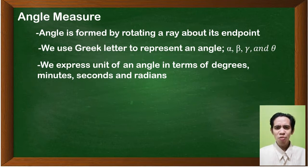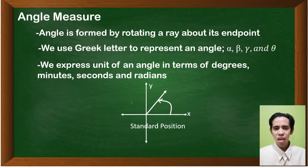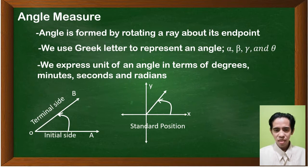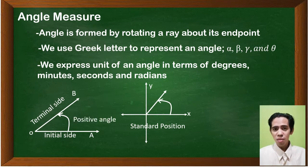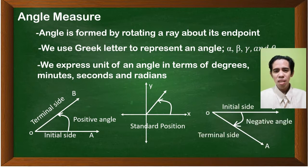An angle is in standard position if it is drawn in a coordinate plane with its vertex at the origin and its side on the positive x-axis. The positive x-axis will serve as our initial side, and the line where it points will be the terminal side. When the angle rotates counterclockwise, it is positive; but when the angle rotates clockwise, the sign will be negative.